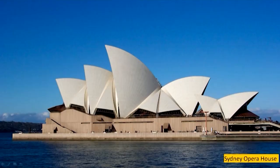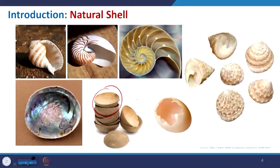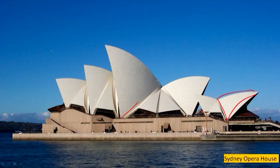Let us go through some examples. One example is the Sydney Opera House from Sydney, Australia. This shell form is very nicely placed with the water body and gives a beautiful view, while also creating a nice interior. If you compare it with some shell structures you will see the similarity in how it is formed.